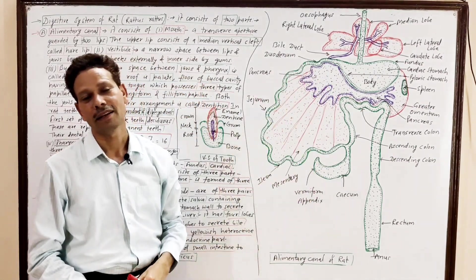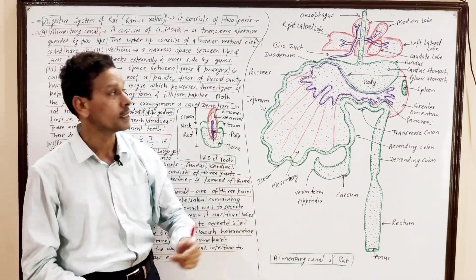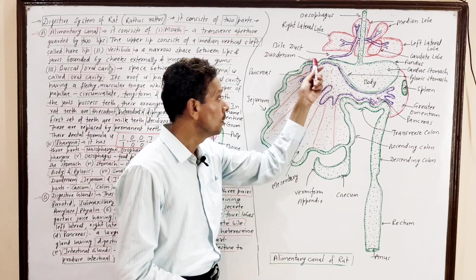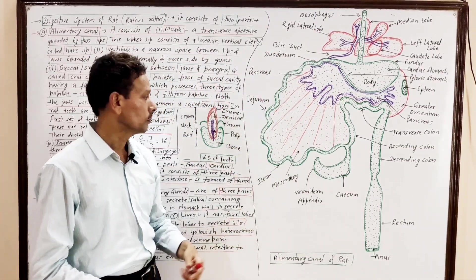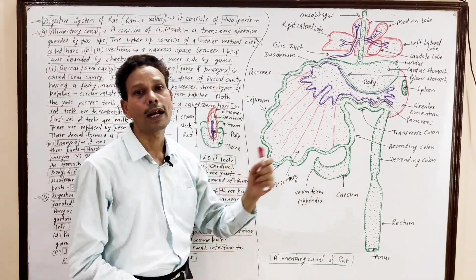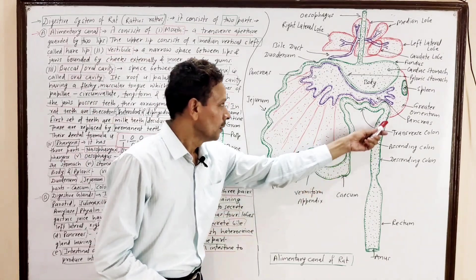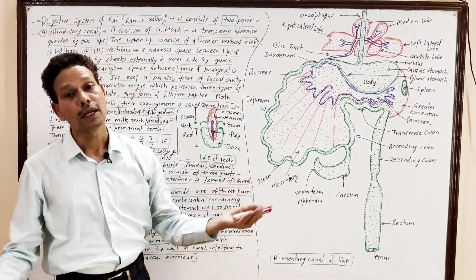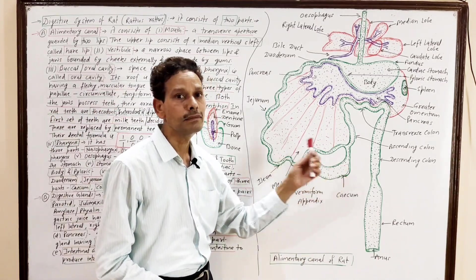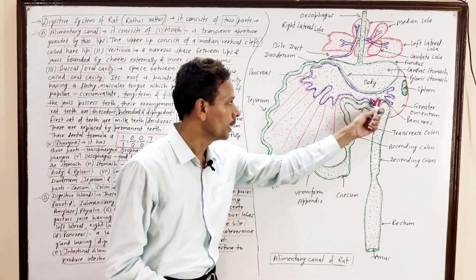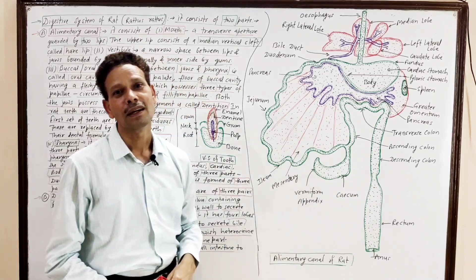The next part is the small intestine. In case of RAT, the small intestine is divided into three parts: the upper part is the duodenum, the middle part is the jejunum, and the last coiled tubular structure is the ileum. The last part of the alimentary canal is the large intestine, which has three parts: cecum, colon, and rectum.